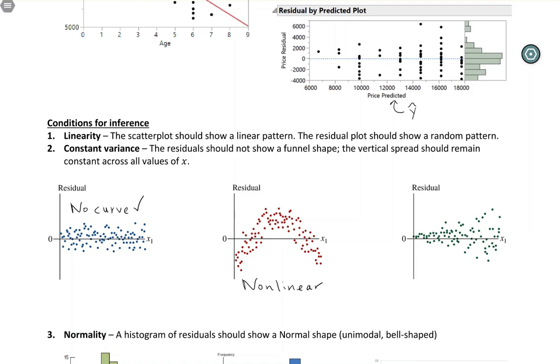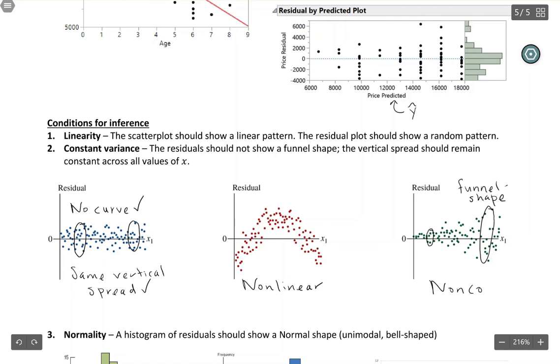Another thing that we can look at in the residual plot is constant variance. So what we want is something like this. We want the vertical spread to be the same at the low end and the high end of the scale. So this one looks really nice. We've got the same vertical spread no matter where we are on the x-axis. Compare that to this one where you have a really small vertical spread on one end and a large vertical spread on the other end. This is not what we want to see. Sometimes you hear this called a funnel shape. And if you have a funnel shape, that's going to be an indication of non-constant variance.